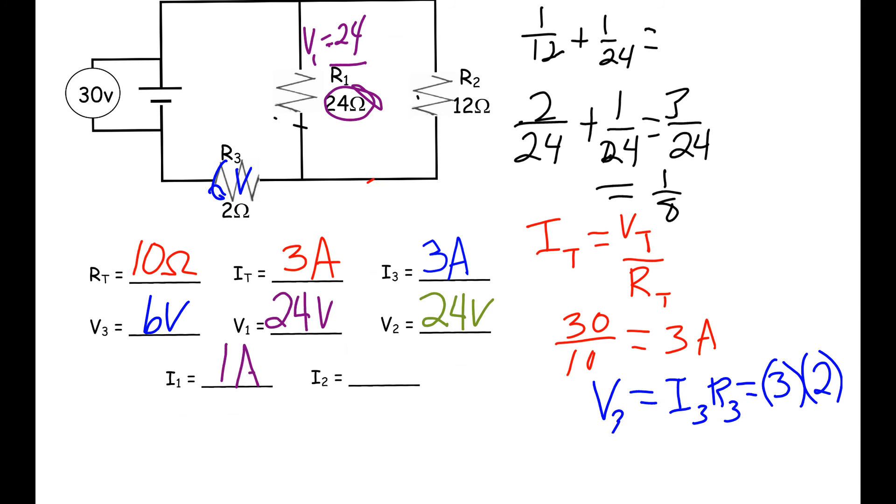And finally, as we find out what our I2 is, same type of deal. V2 is equal to 24, and we're going to divide that by 12 ohms because that's our R2. That gives us a total of 2 amps.